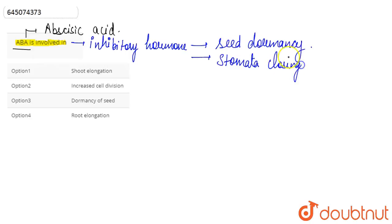are the functions of ABA. So we look at the options here. Option one is shoot elongation. The plant hormones that are involved in shoot elongation are basically auxin and gibberellins.